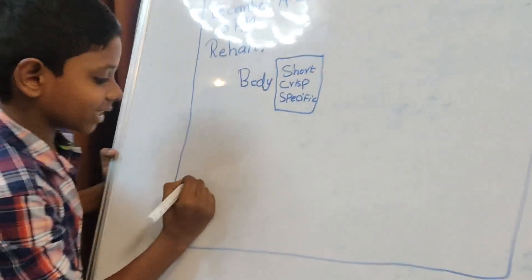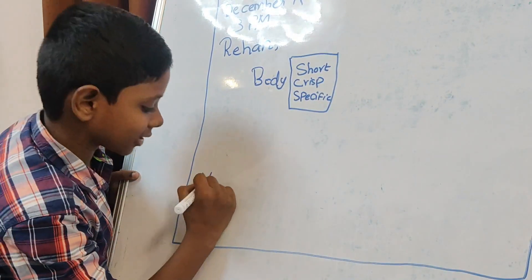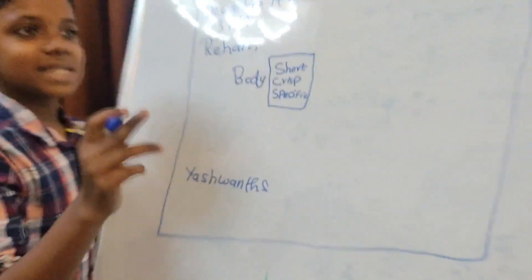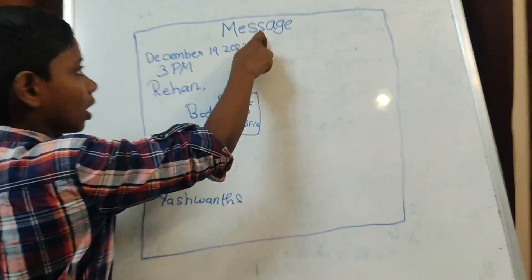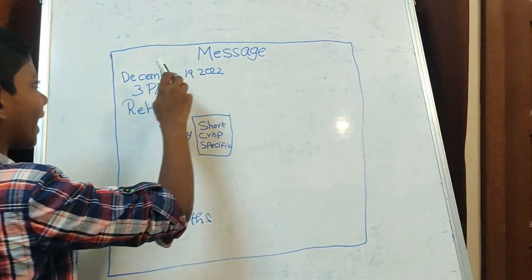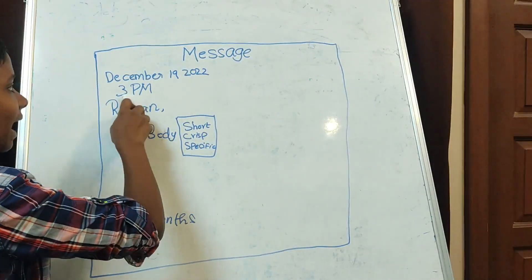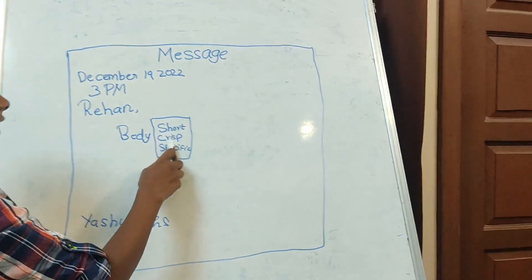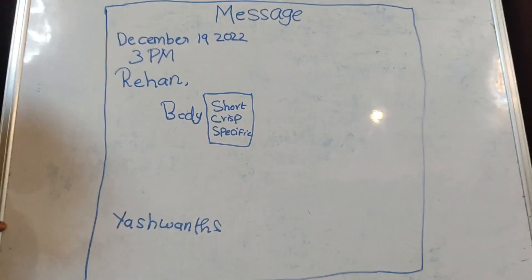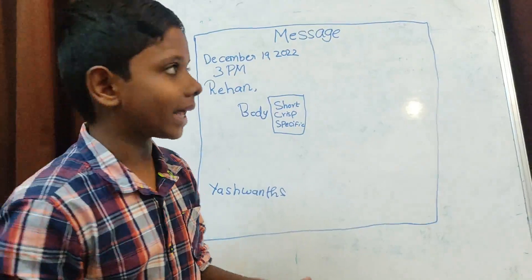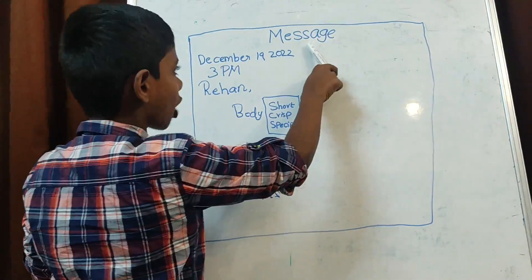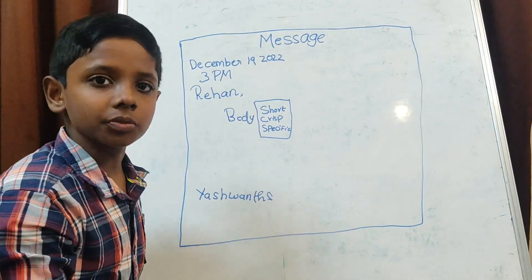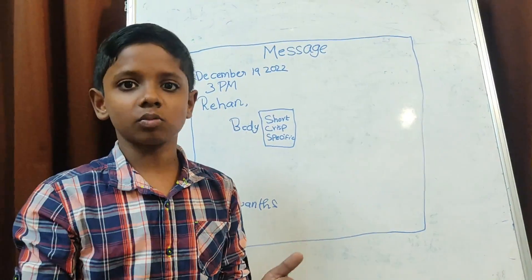Finally, you should write the writer's name, for example, Yeshwant. So those are all six main points to remember: on top write 'Message,' then the date in full letters, the time, the name of the receiver, the body of the content which should be short, crisp, and specific, and finally the writer's name. Another important point: 'Message' should be center-aligned at the top, and then everything else should be left-aligned near the margin.